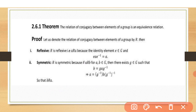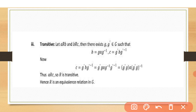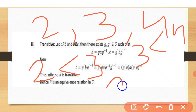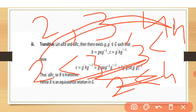Now we discuss the last property: transitive. If the relation is transitive then it is an equivalence relation. Transitive means, for example, if 2 is smaller than 3 and 3 is smaller than 4, then 2 is also smaller than 4. So if a R b and b R c, then a R c. This is called a transitive relation.